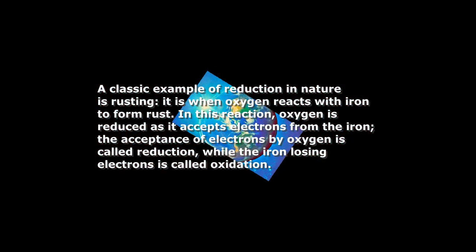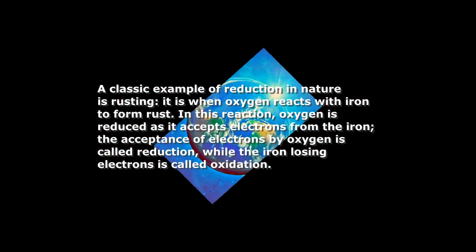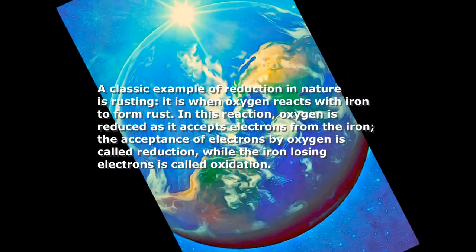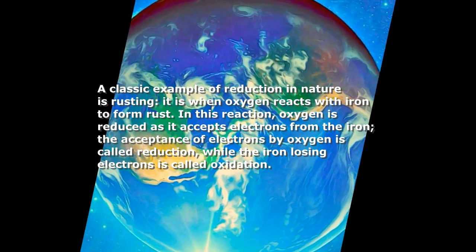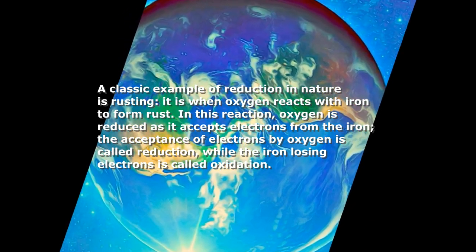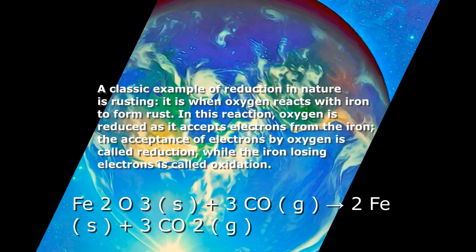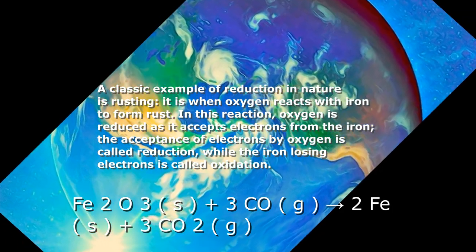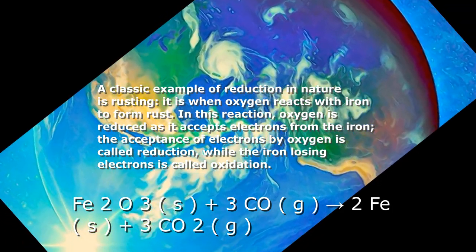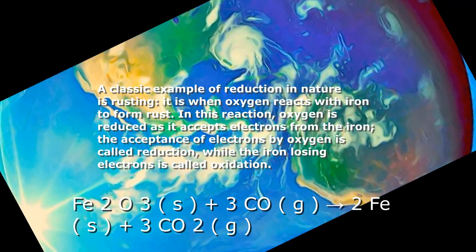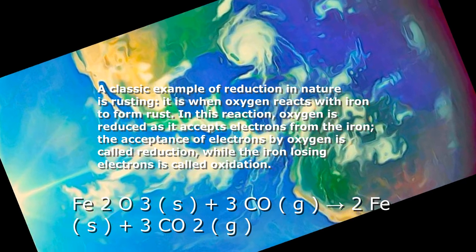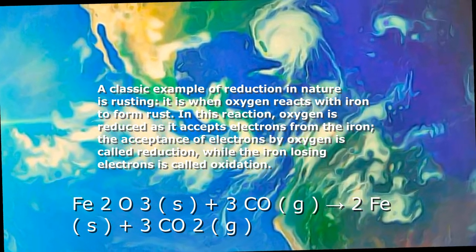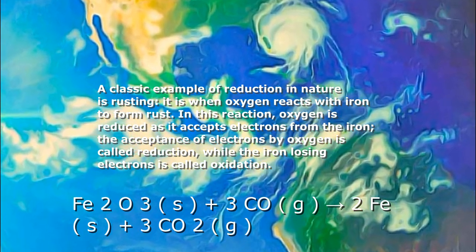A classic example of reduction in nature is rusting — it is when oxygen reacts with iron to form rust. In this reaction, oxygen is reduced as it accepts electrons from the iron. The acceptance of electrons by oxygen is called reduction, while the iron losing electrons is called oxidation.